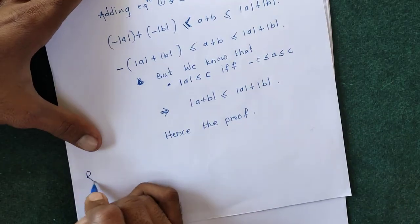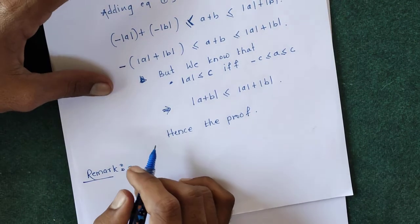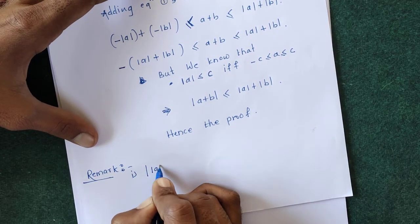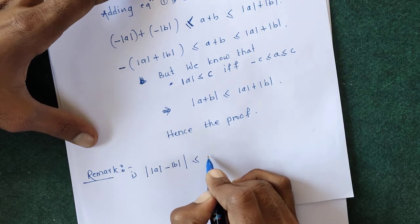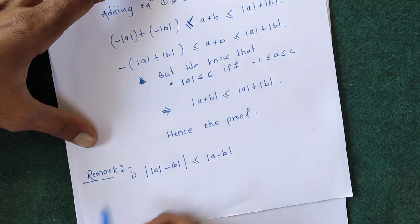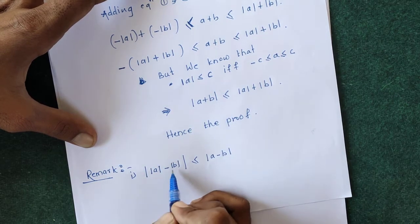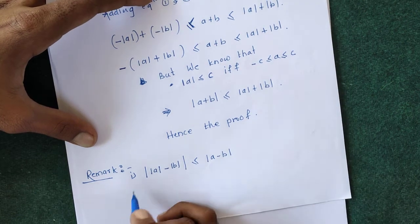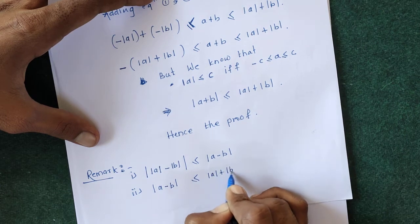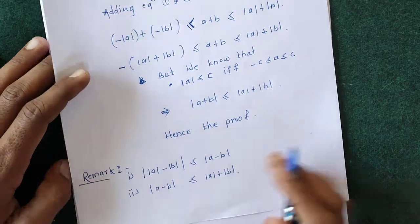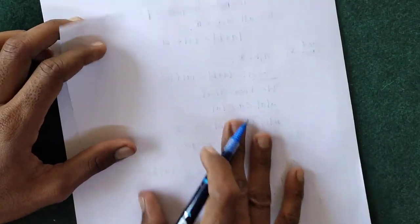Two remarks as additional properties of modulus: the first remark is that mod(mod a − mod b) is less than or equal to mod(a − b). The second remark is that mod(a − b) is less than or equal to mod a + mod b. These properties will be used in further examples.